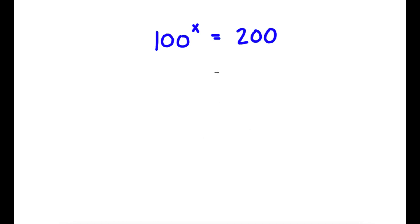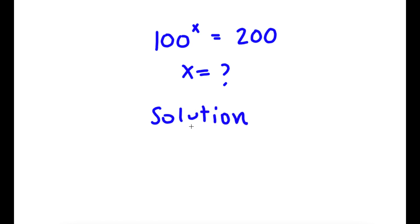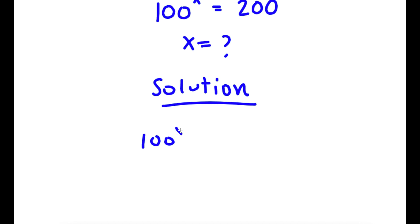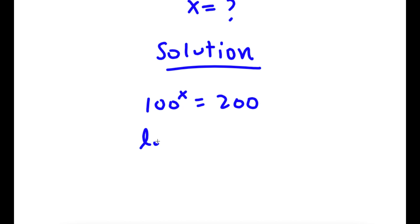In this problem, I have 100 to the power of x is equal to 200, and I'm going to find the value of x. For my solution, I start with 100 to the power of x is equal to 200, and now I'm going to take the log on both sides. So now I have log 100 to the power of x is equal to log 200.